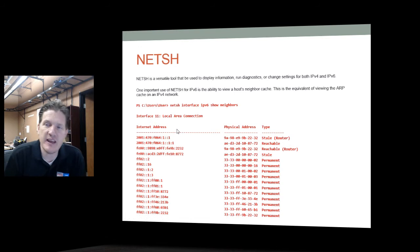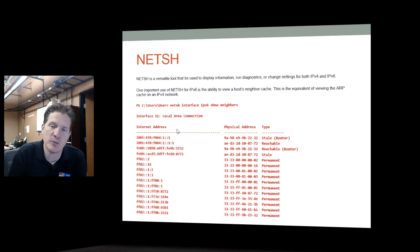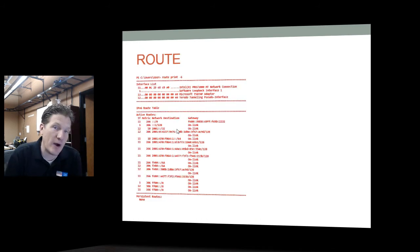The 'netsh' command lets you view the neighbor cache — type 'netsh interface ipv6 show neighbors' to see all IPv6 machines discovered via the neighbor discovery process. You can also type 'route print -6' to view your IPv6 routing table. So we've covered the entire IPv6 address space, including the basic ideas, auto-configuration, neighbor discovery, address format, and how addresses are created. Hopefully you now have a good picture of what IPv6 is. Thank you very much.